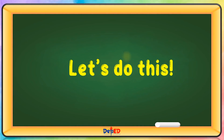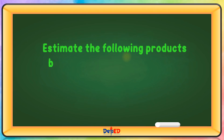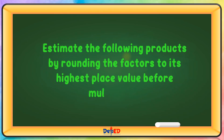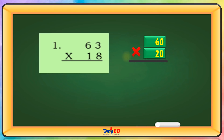Let's do this. Estimate the following products by rounding the factors to its highest place value before multiplying. 63 will be rounded off to 60, and 18 is rounded off to 20. 60 times 20 equals...